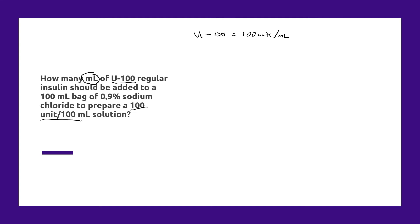So U-100 is equal to 100 units per milliliter. Insulin also comes in a U-500 form, meaning there's 500 units per milliliter, but most insulin is U-100 as in this example. So we're going to need that information as we solve for this problem.